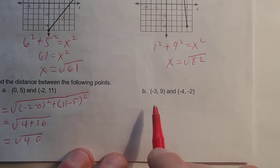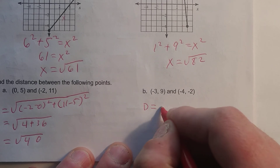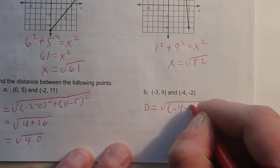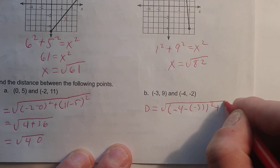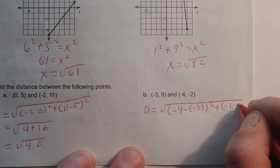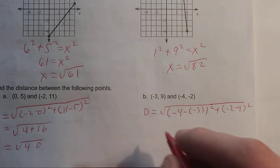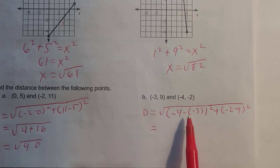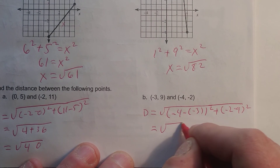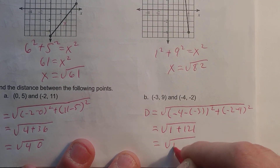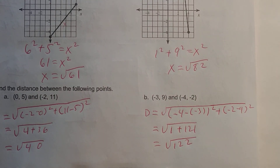And then the last one, part B. I'm going to do the same thing — change in Y plus change in X. So I go: negative 4 minus a negative 3, squared, plus negative 2 minus 9, squared. Negative 4 minus negative 3 is the same as negative 4 plus 3, which is negative 1 — negative 1 squared is 1. Negative 2 minus 9 is negative 11 — negative 11 squared is 121. So you should have had a square root of 122.